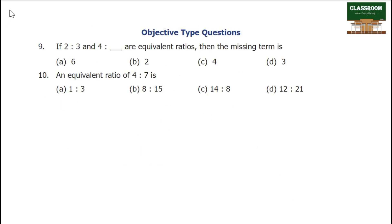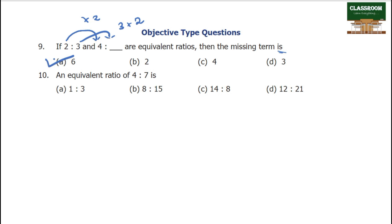Objective type question. If 2 is to 3 and 4 is to dash are equivalent ratios, then the missing term is: 4 into 2 equals 8 — no; 3 into 2 equals 6. So 6 is the missing term.